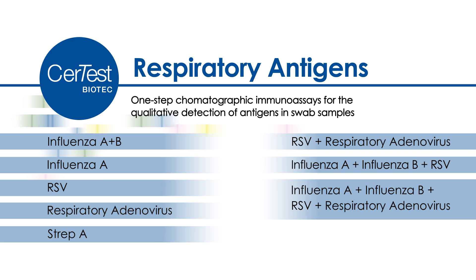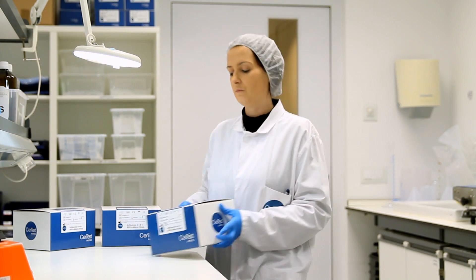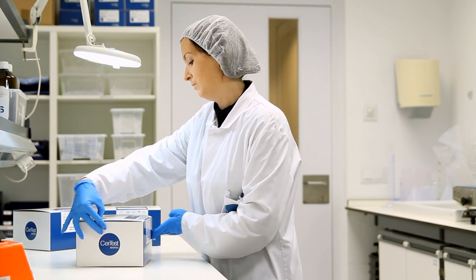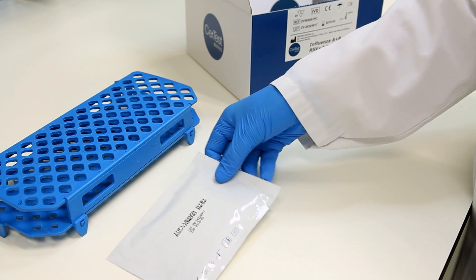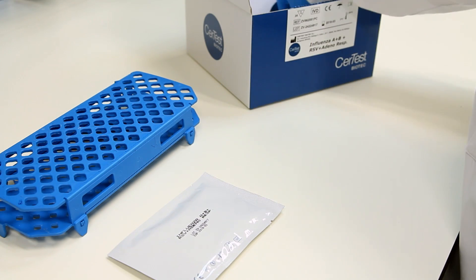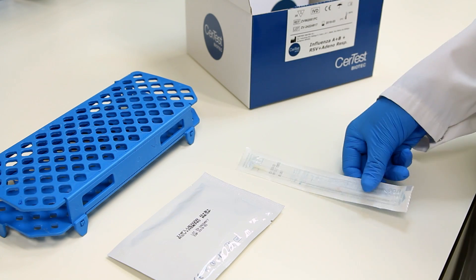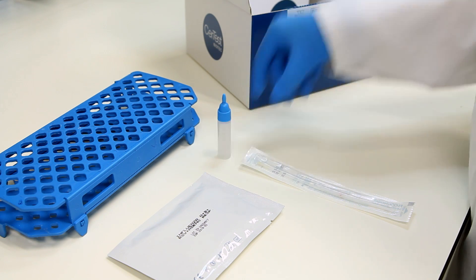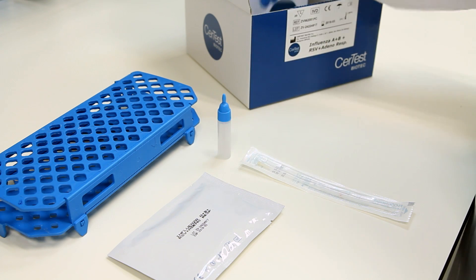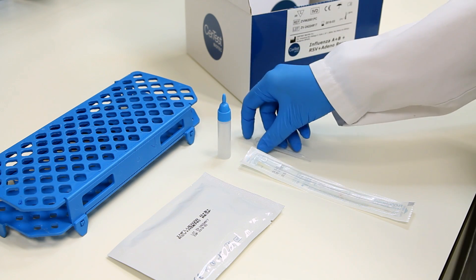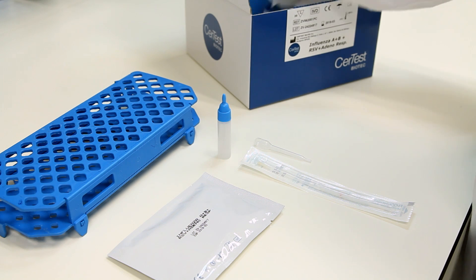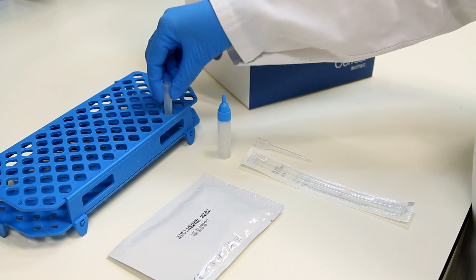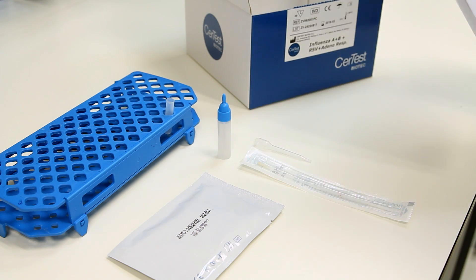The Sertest kit for the detection of Influenza A, Influenza B, RSV and respiratory adenovirus contains a pouch with a combo cassette, swab for specimen collection, sample collection tubes with diluent, disposable pipette, testing tube, and instructions for use.